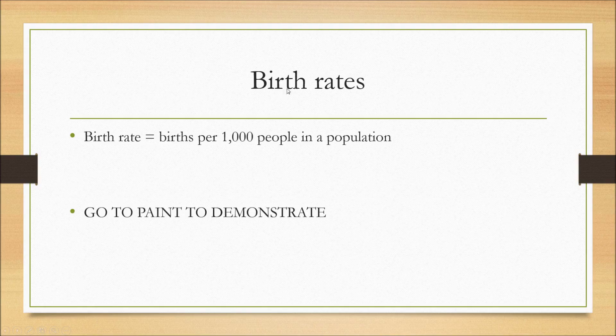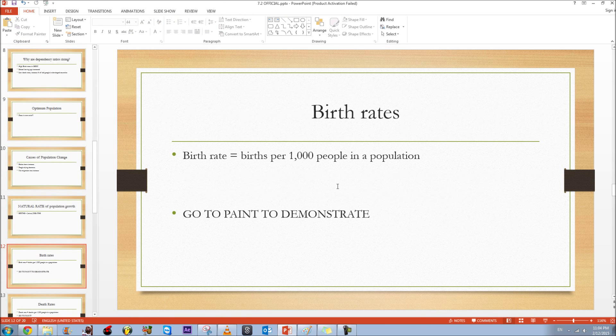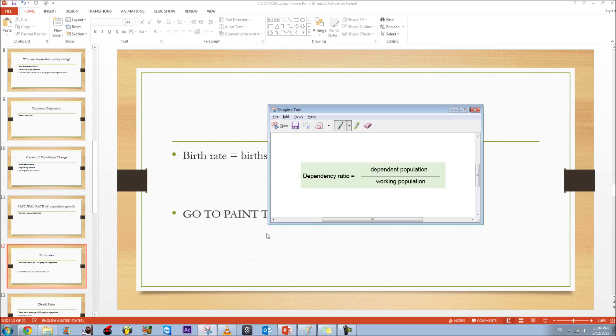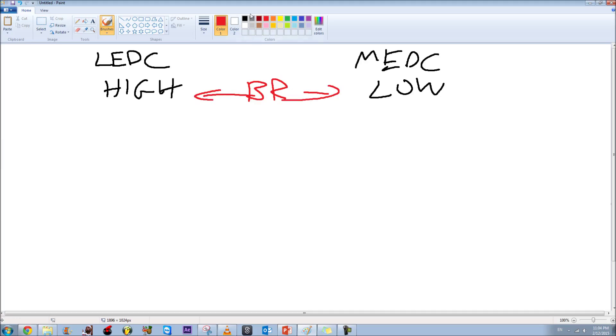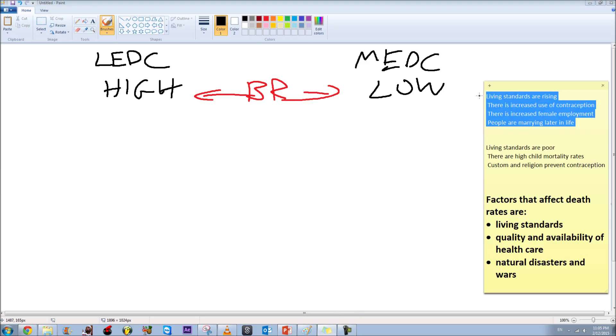So the first concept or the first term is birth rates and this basically, birth rate is defined by birth per 1000 people in a population. So let me go to paint to make it clear for you guys. So in less developed countries there will be high birth rates whereas in more developed or developed countries or economies there will be a low birth rate.